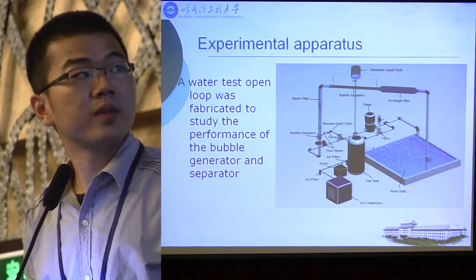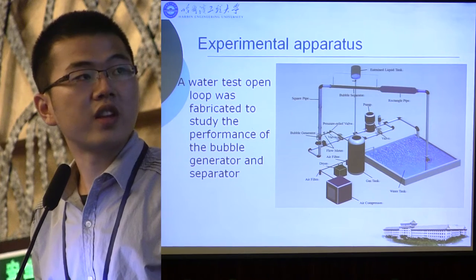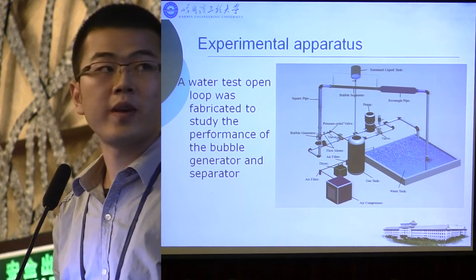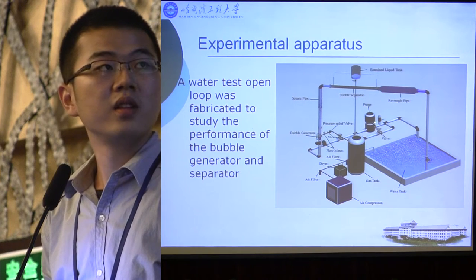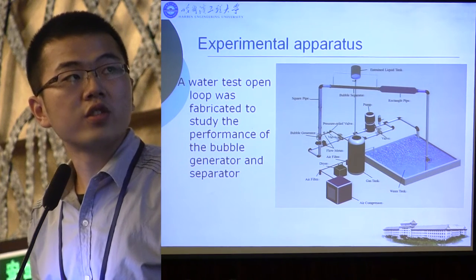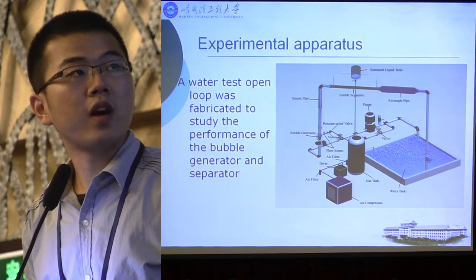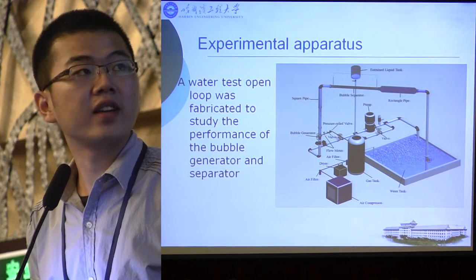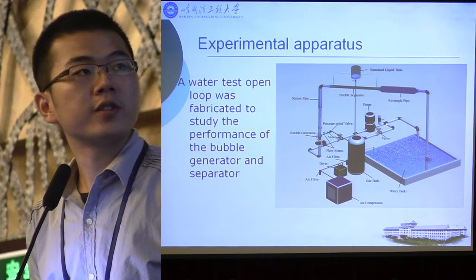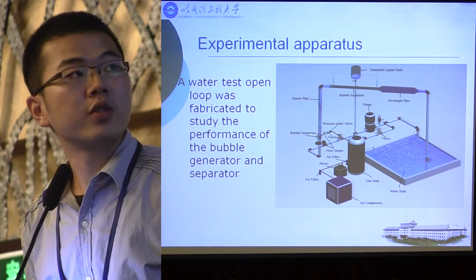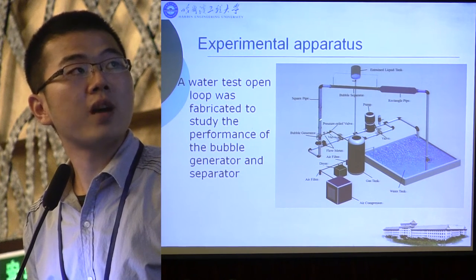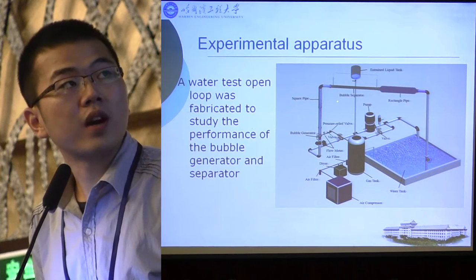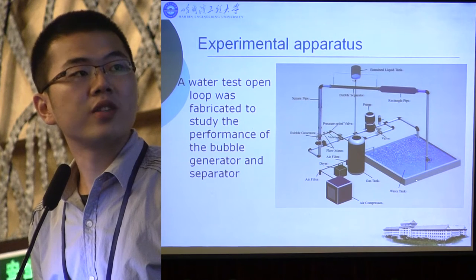In order to study the performance of the bubble generator and the separator, a water test open loop was fabricated. The water was circulated by a centrifugal pump. The gas was produced by an air compressor and stored in a gas tank. The water first flowed through the bubble generator to produce bubbles, then passed through the bubble separator and flowed back into the water tank.